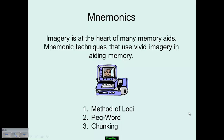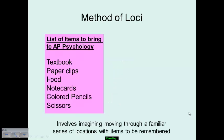One way to help encode a large amount of information and establish visual imagery is through mnemonic devices. These use vivid images to help us encode large amounts of information. There are three key kinds: the method of loci, peg words, and chunking.